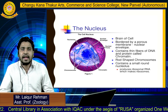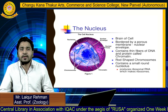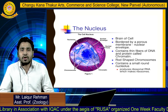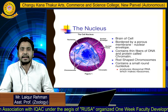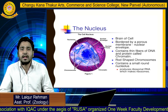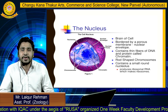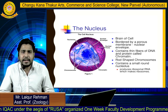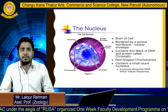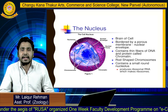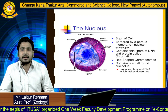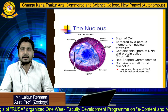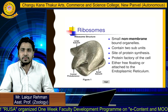The nucleus contains thin fibers of DNA and protein called chromatin. It has rod-shaped chromosomes and contains a small round nucleolus. It produces ribosomal RNA, which makes the ribosomes.